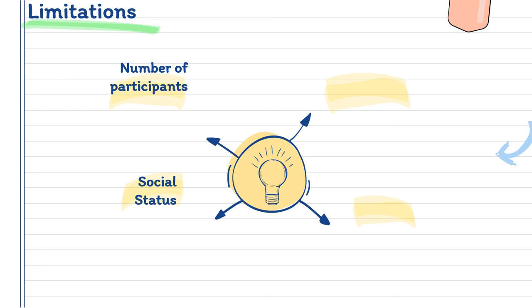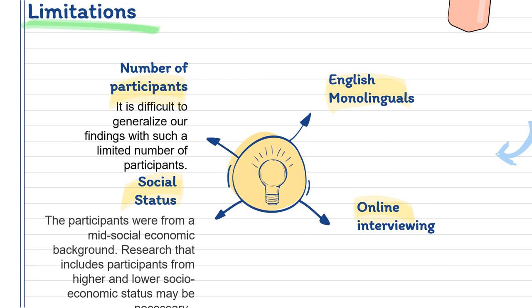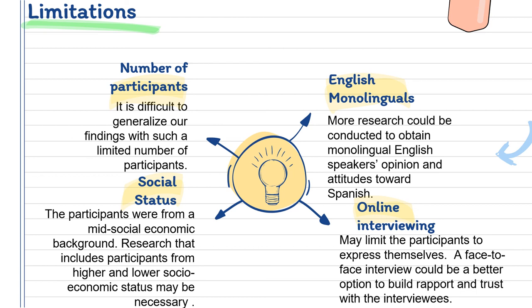Limitations. The number of participants is a limitation — it is difficult to generalize findings with such a limited number. Also regarding social status, the participants were from a mid-socioeconomic background; research including participants from higher or lower socioeconomic status may reveal interesting findings. More research could be conducted to obtain monolingual English speakers' opinions and attitudes towards Spanish, since here we are only analyzing one side of the equation. Online interviewing may limit participants' ability to express themselves — a face-to-face interview could be a better option to build rapport and obtain more valuable information.